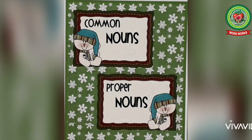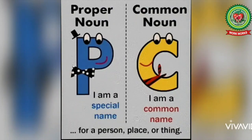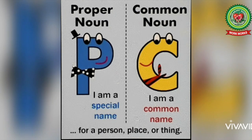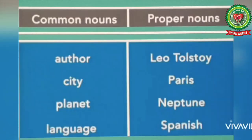Before starting the exercise, you should know the difference between common nouns and proper nouns. A proper noun refers to a special name for a person, place, or thing, whereas a common noun refers to a common name for a person, place, or thing. Let us clear this difference with examples. Number one: 'author' — when we talk about author, it refers to the name of a common person, so it is a common noun.